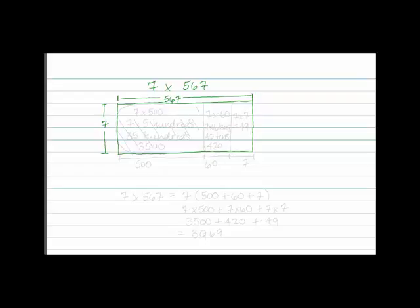Let's break it down a little bit. So, let's say that 567 is really 500 plus 60 plus 7. And let's think about how this might look.